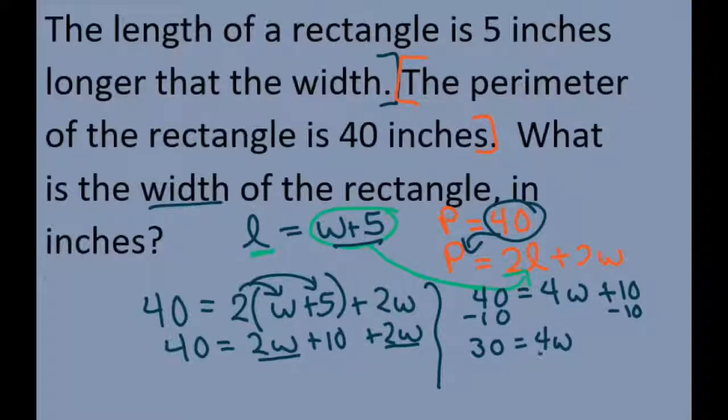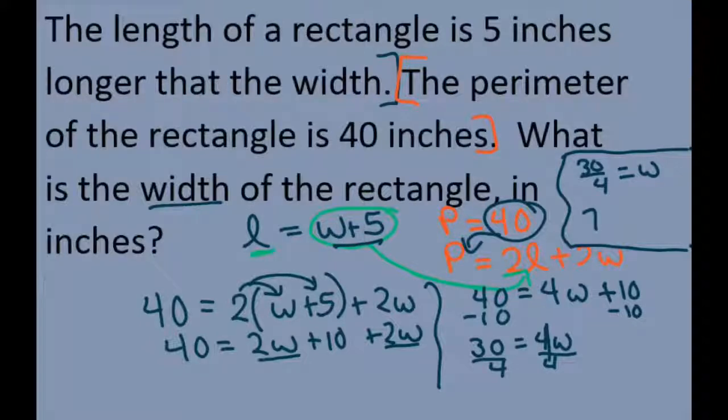And then divide both sides by 4. So I'm going to move it up here so I don't have to do another slide. So you're going to get 30 divided by 4 equals W. Now, if you simplify that, 4 goes into 30 seven times with 2 left over. There's your remainder. So that's 7.5 or 7 and a half.